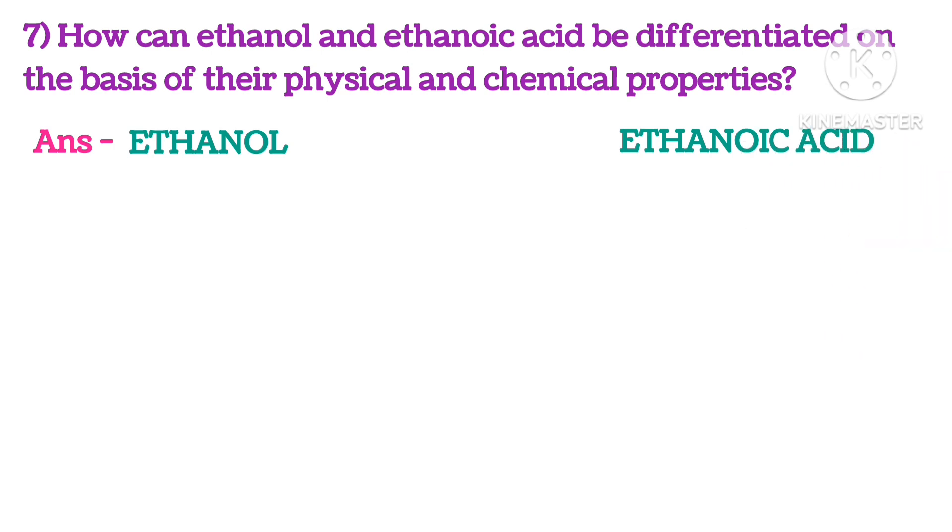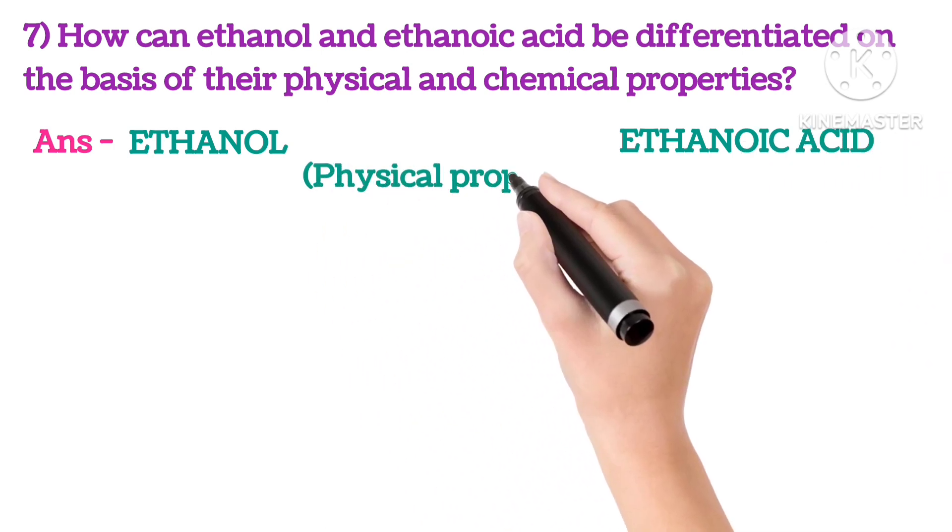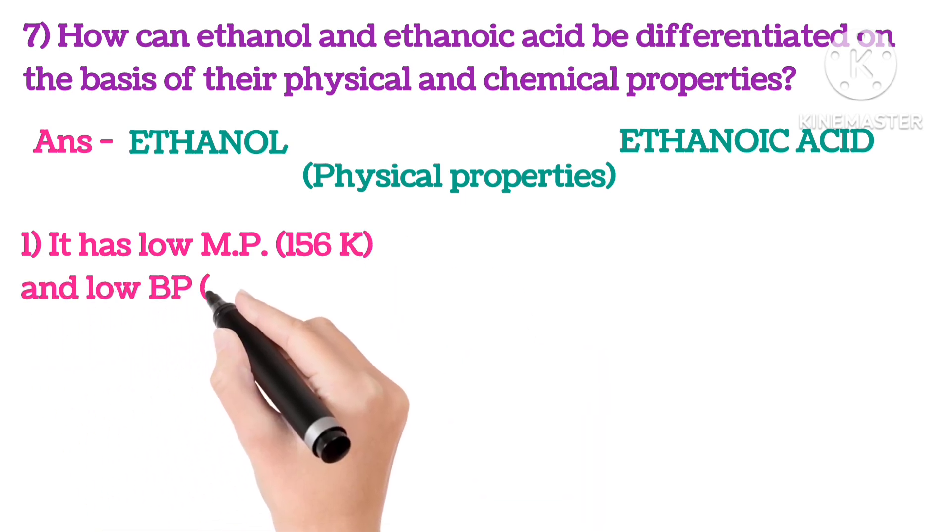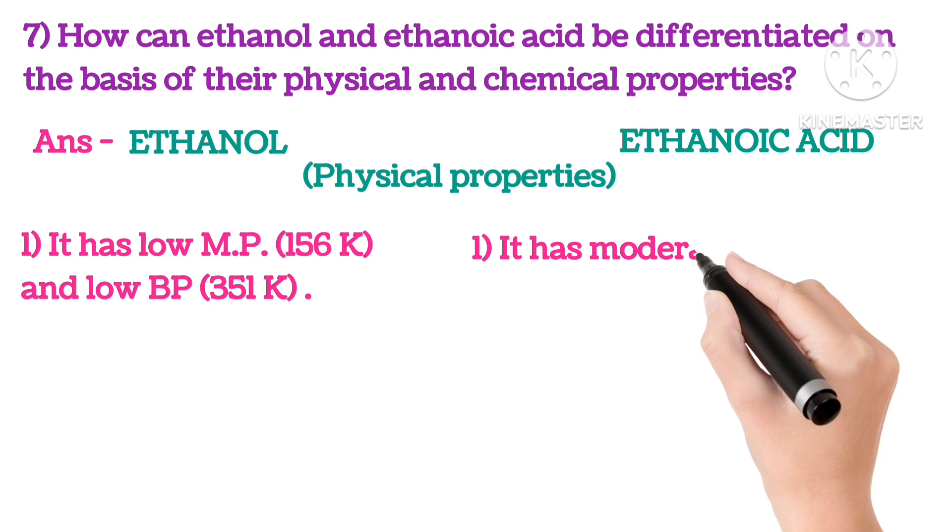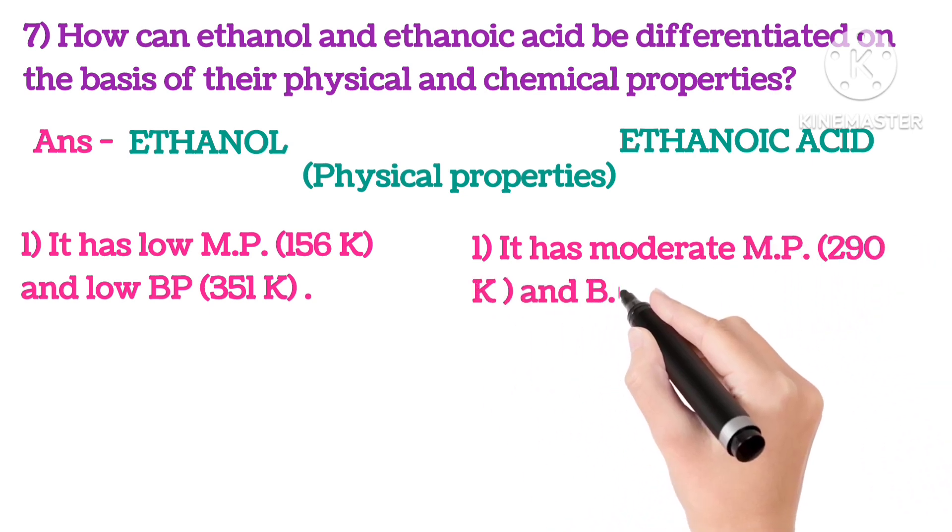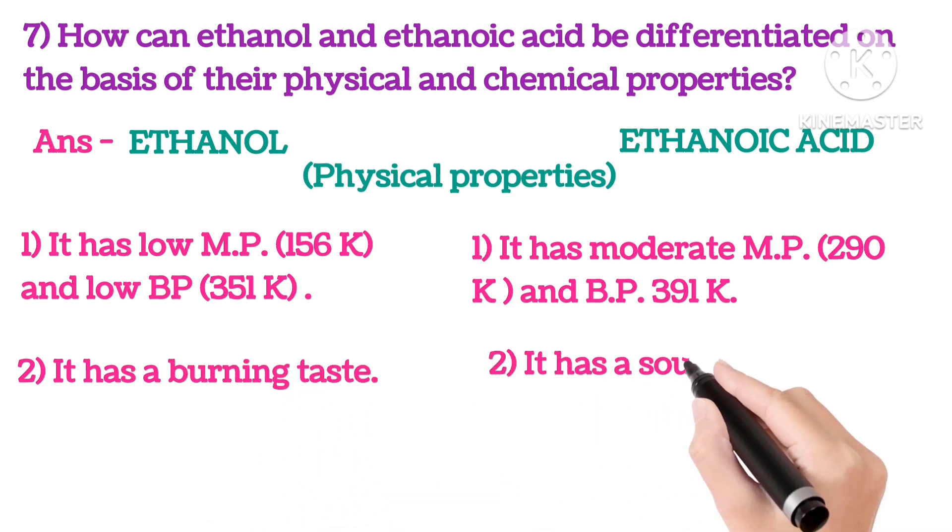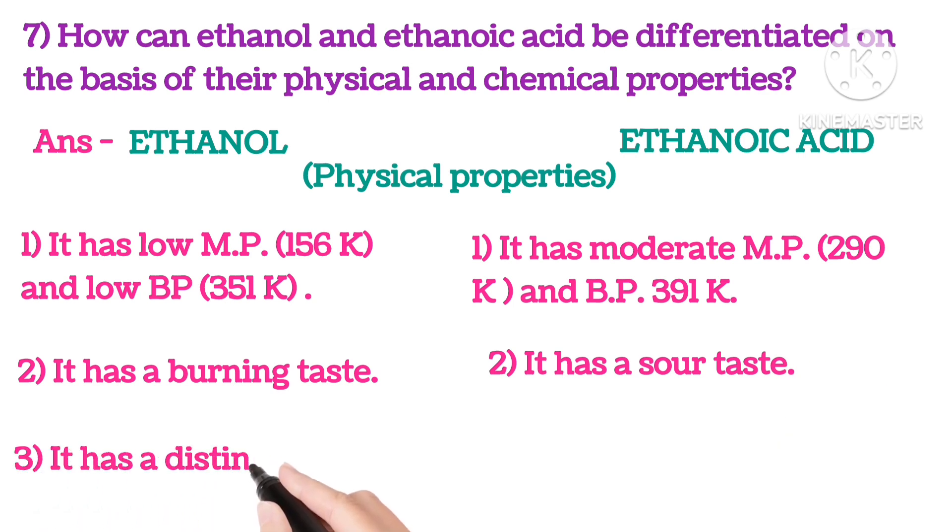The differences between ethanol and ethanoic acid on the basis of physical properties are: Ethanol has low melting point, 156, and low boiling point, 351 Kelvin, whereas ethanoic acid has moderate melting point, 290, and boiling point, 391 Kelvin. Ethanol has a burning taste, ethanoic acid has a sour taste. Ethanol has a distinct smell, ethanoic acid has a pungent smell.